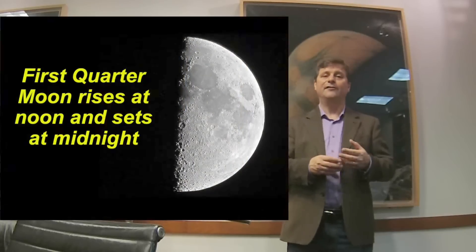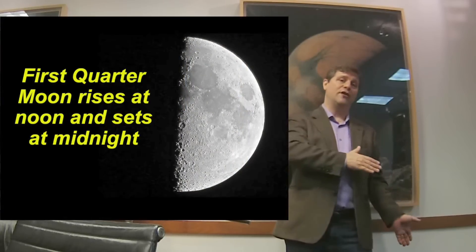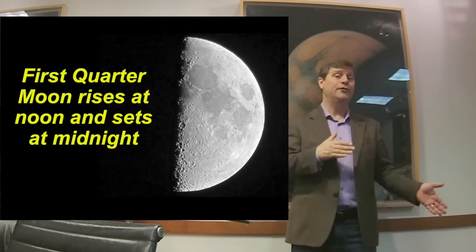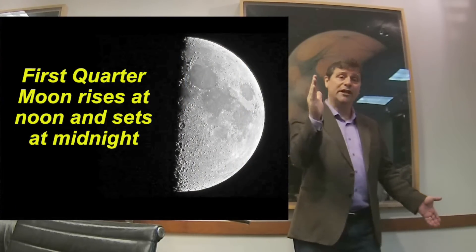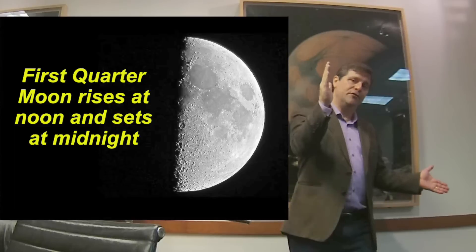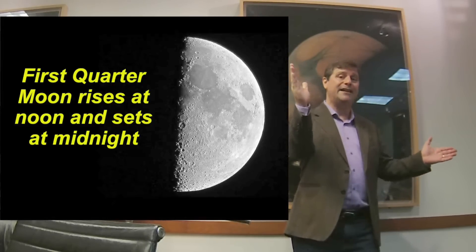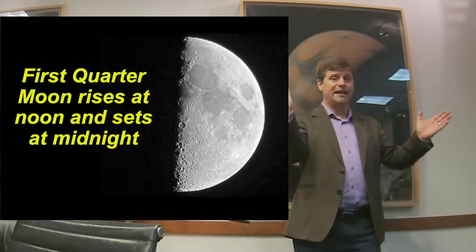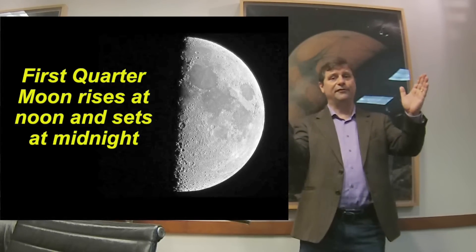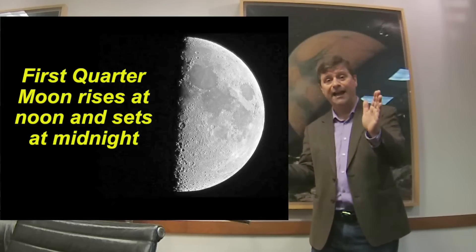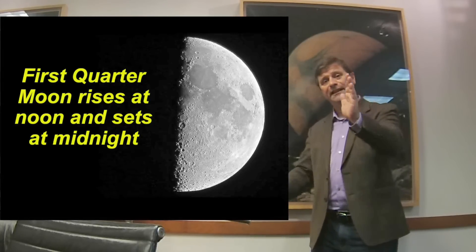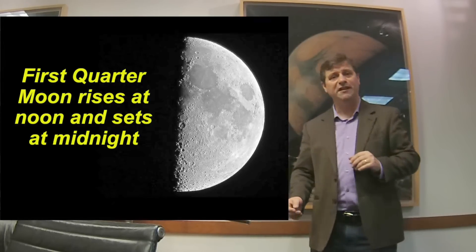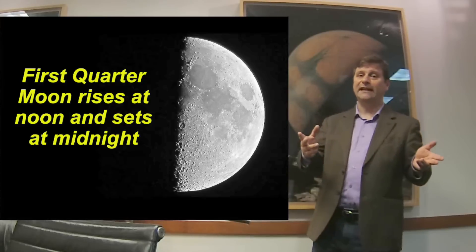The first quarter Moon rises when it's 90 degrees away from the Sun in the sky — that means the Sun is at noon, and therefore the first quarter Moon rises at noon. The first quarter Moon is high in the sky at sunset, and then it sets at midnight.